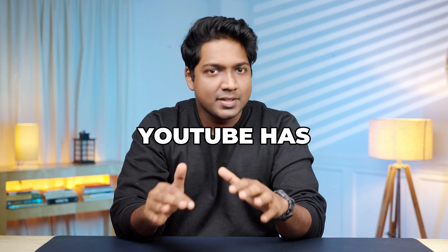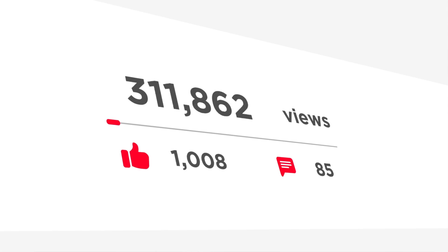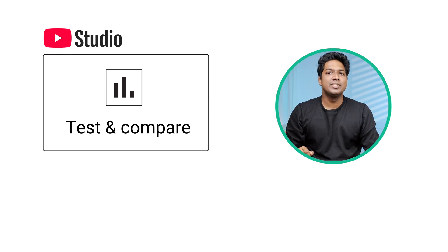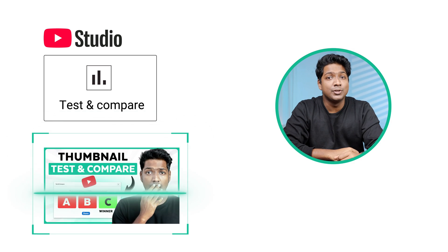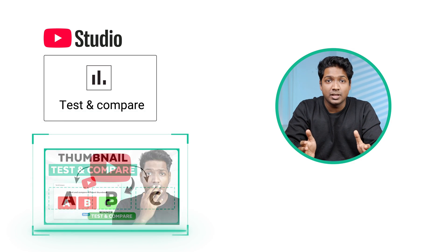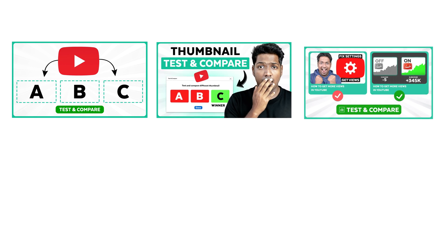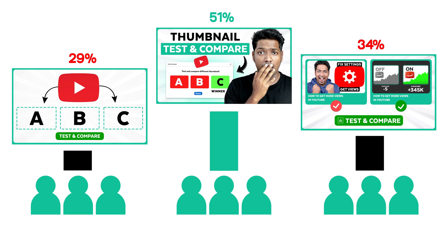Did you know that YouTube has a secret weapon that can boost your views? It's called the Test and Compare feature and it's like having a crystal ball for your thumbnails. This feature allows you to test multiple thumbnails simultaneously, where YouTube shows different versions to viewers and tracks which one performs better.